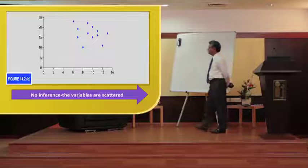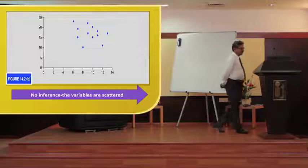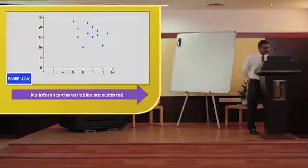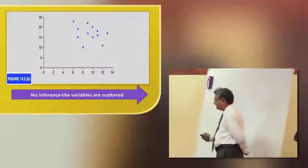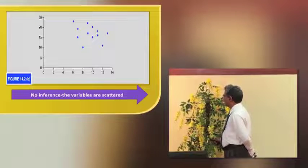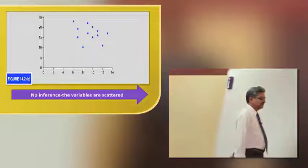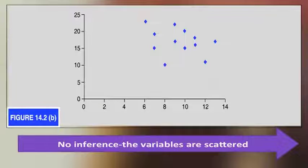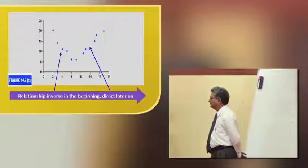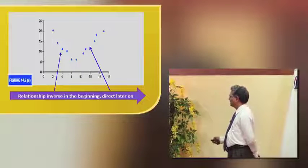Here is another scatter graph where the values of y are captured as x moves, but you can see the values are scattered — it does not tell us anything, either going up or coming down. From this kind of scatter graph, you cannot draw an inference; the relationship is weak. So you cannot use this for predicting anything.